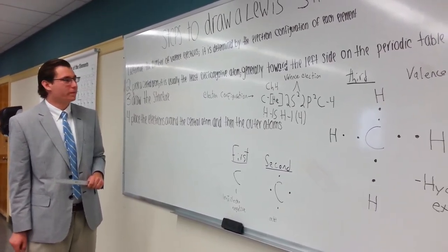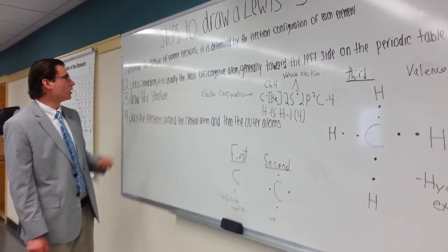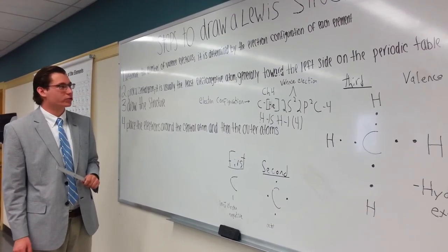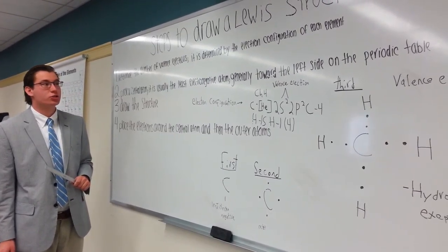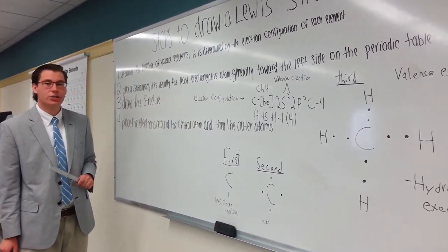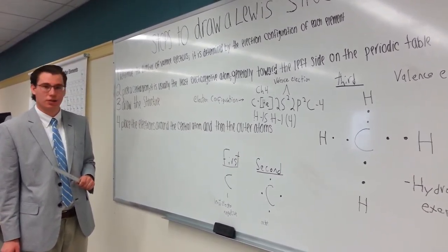Steps to draw a Lewis structure. 1. Determine the number of valence electrons. It is determined by the electron configuration of each element.